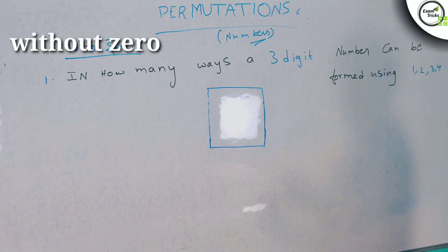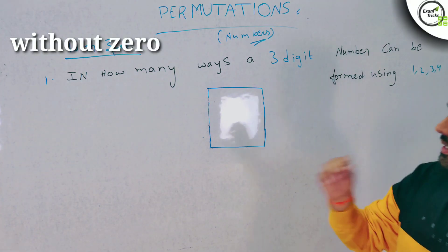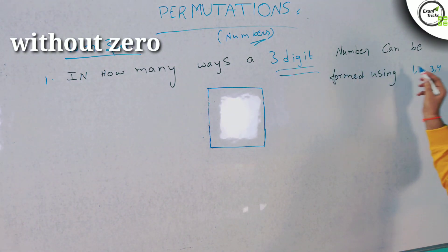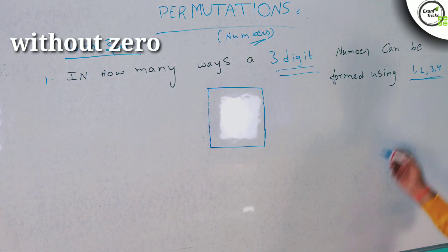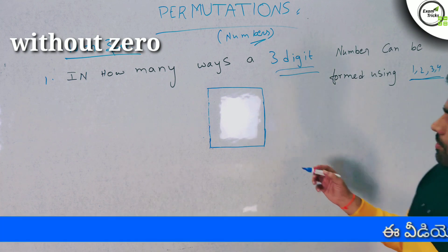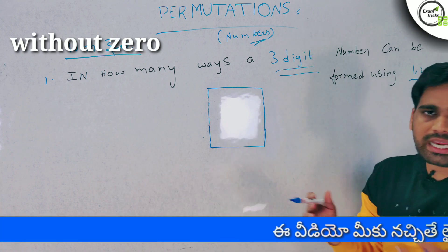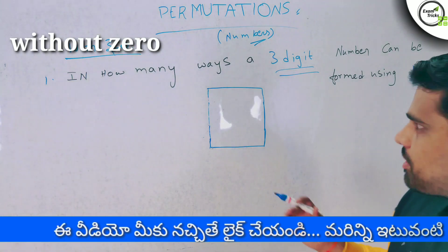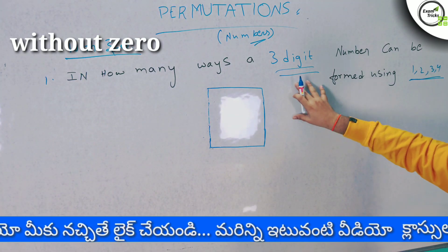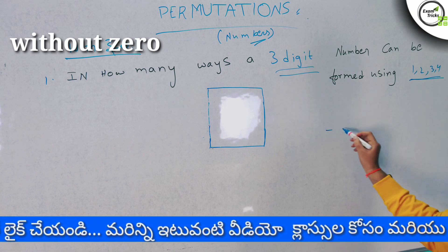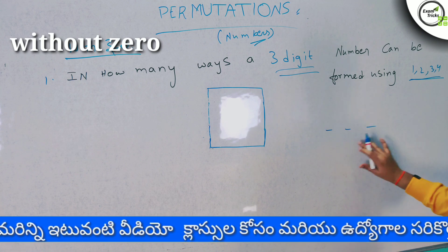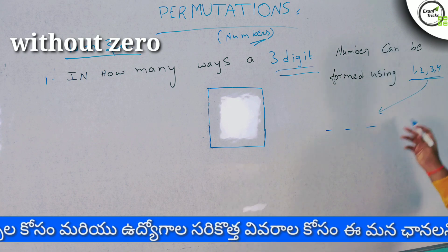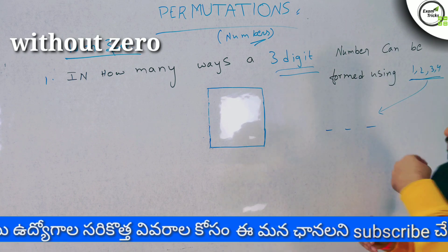The first question is: in how many ways can a 3-digit number be formed using 1, 2, 3, 4? Permutations means arranging, so the arrangement order uses permutations. We will form a 3-digit number from 4 available digits.